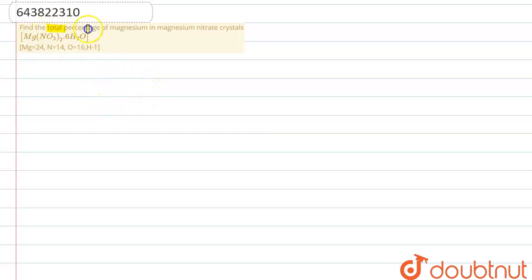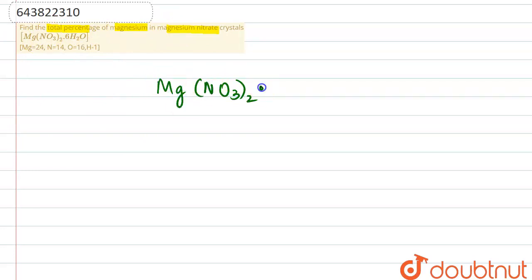Find the total percentage of magnesium in magnesium nitrate crystals. The formula is given as Mg(NO₃)₂·6H₂O — that is, with six molecules of water of crystallization. The atomic masses of the elements are also given to us.